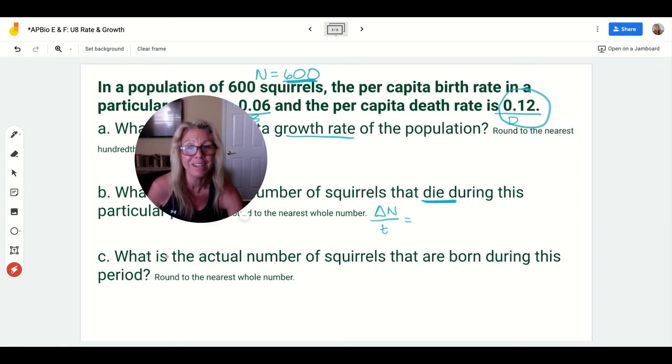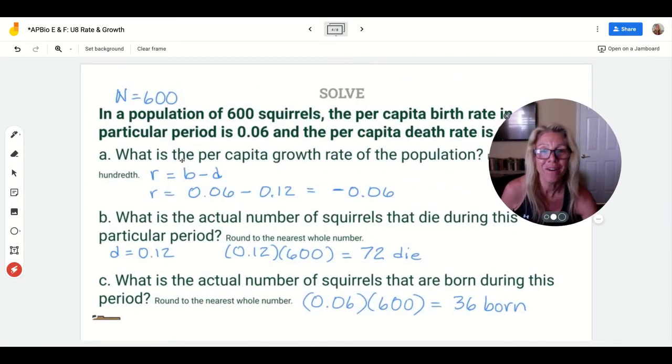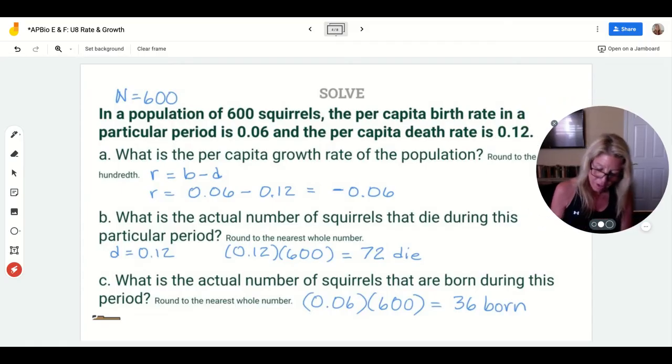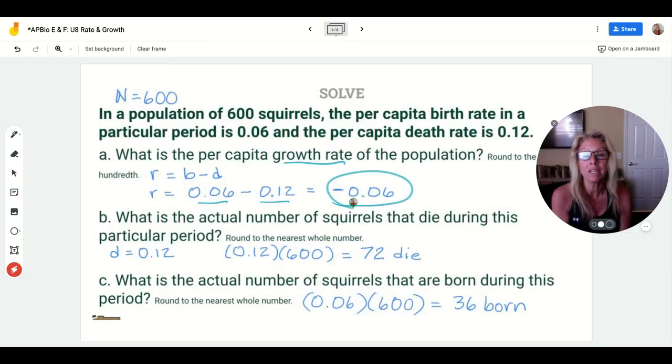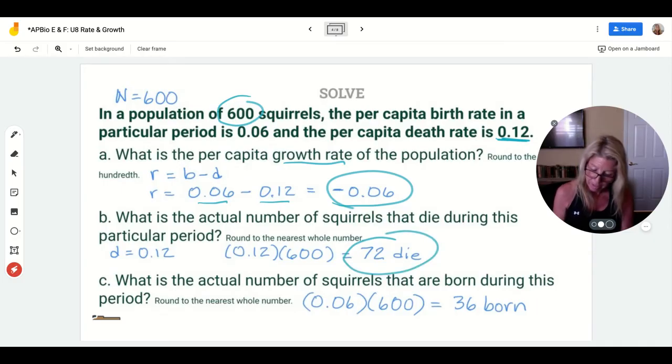If you do the math, to calculate the per capita growth rate, r equals B minus D. I took my birth rate minus my death rate and got this, which means my population is going down. What is the actual number of squirrels that die? I took my death rate, multiplied it by the number of squirrels, and the math is 72 would die. What is the actual number of squirrels that are born? I took my birth rate multiplied by 600, and 36 were born in that period whereas 72 died.